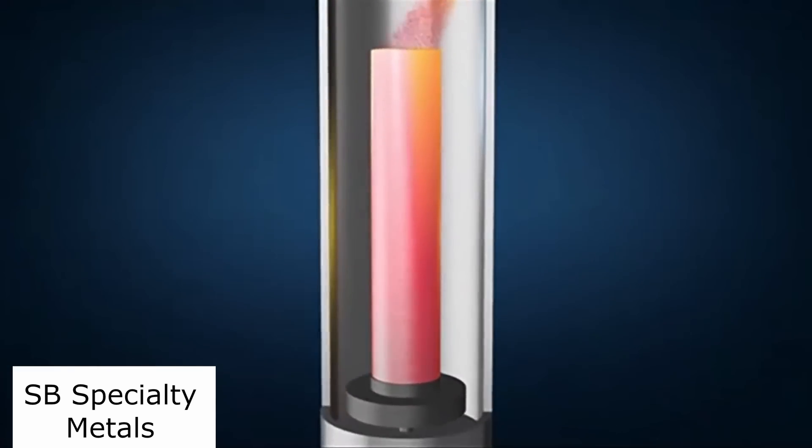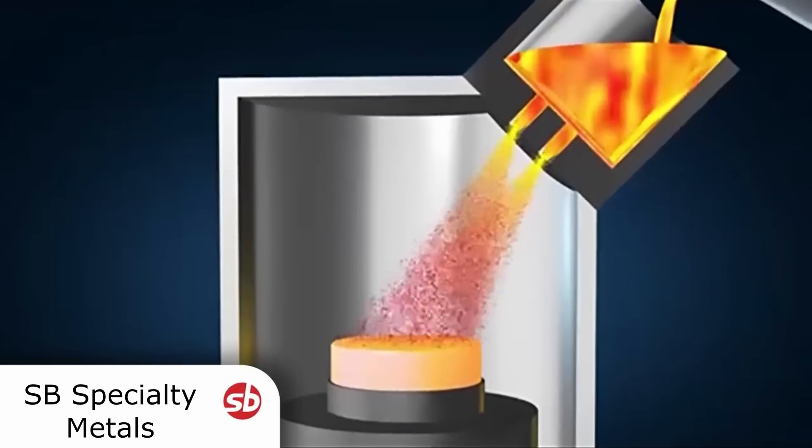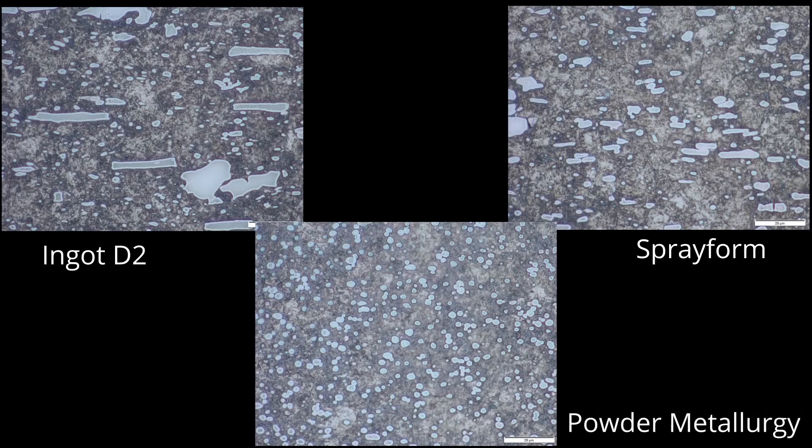It's similar to powder metallurgy in that the liquid goes through a nozzle and is sprayed with nitrogen gas. But instead of fully solidifying, the partially solidified steel is sprayed onto a table, which lowers during processing to create the ingot. So because it doesn't totally rapidly solidify, but instead is sprayed semi-solid onto this table, the cooling rate is in between conventional steelmaking and powder metallurgy. So spray form is not powder metallurgy. It is not called powder metallurgy, at least not by people that understand what it is.